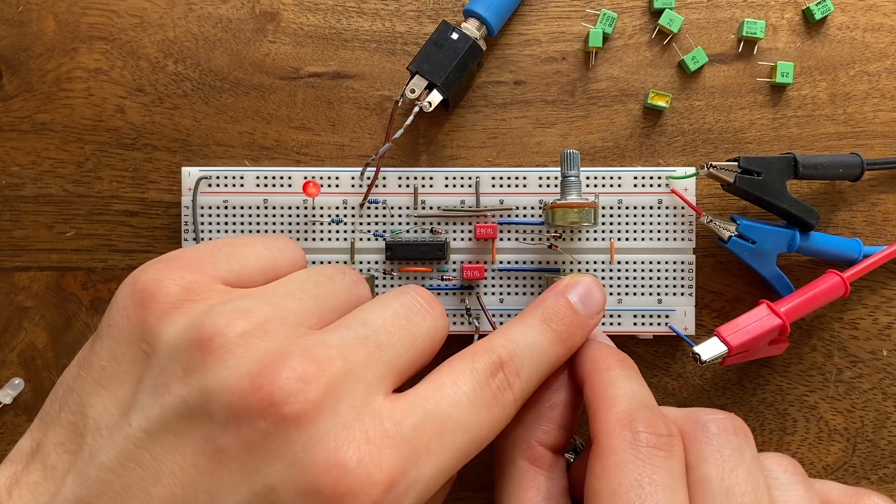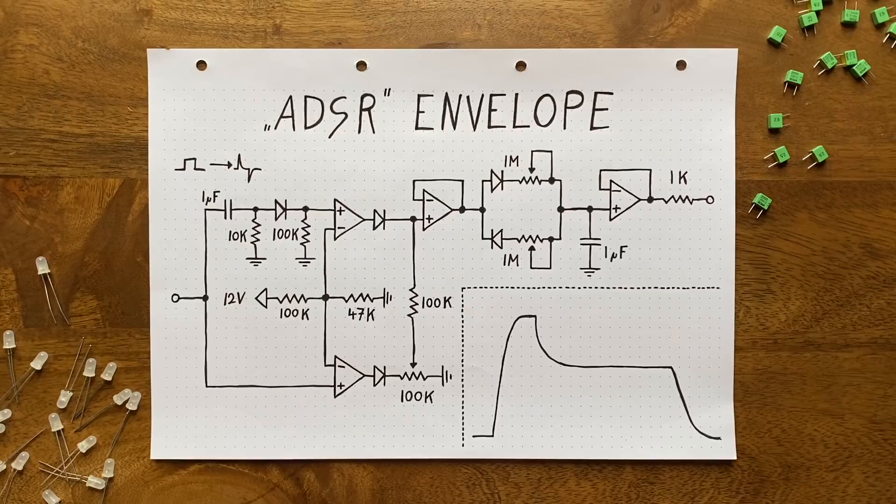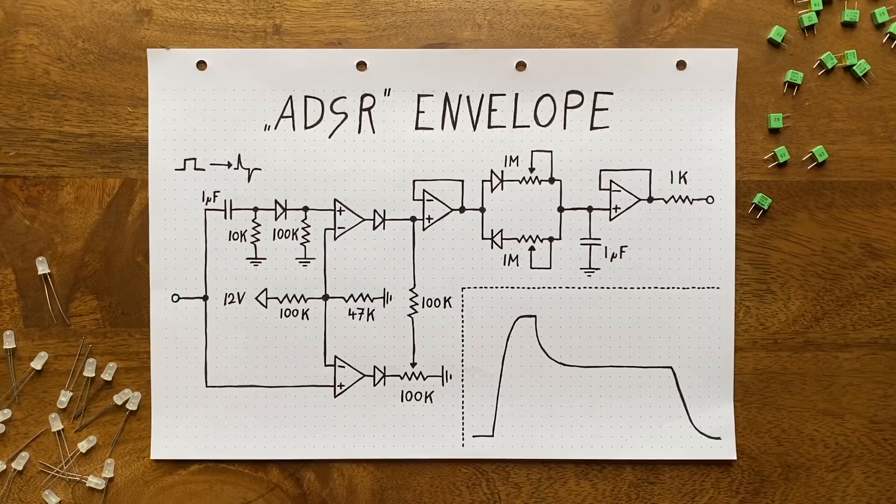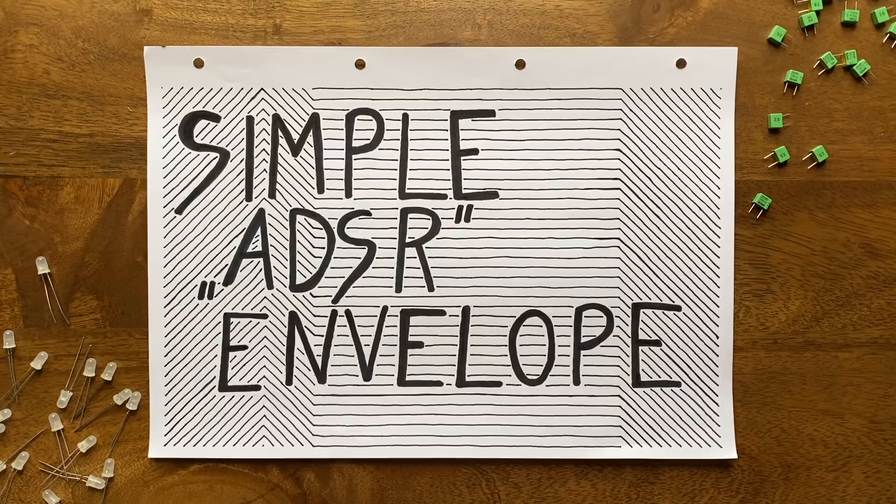So even though this circuit isn't perfect, we can still get a bunch of different sounds from it. Even some percussive hits and acid bass lines, which I am quite happy with. Still, it bugs me a bit that we can't control decay and release independently, as that would be necessary to get an even better acid sound. So in a future video we'll try to beef our circuit up and turn it into a proper ADSR envelope.